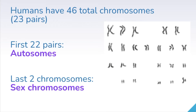First we have to start with a little bit of our basics, so let's look at a karyotype. A karyotype is just an image of all the chromosomes in the nucleus of an organism, in any one cell. In humans we have 46 total chromosomes, or 23 pairs. The first 22 pairs are called autosomes, and the two that are left are our sex chromosomes.